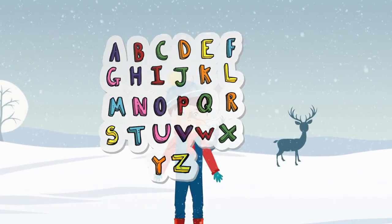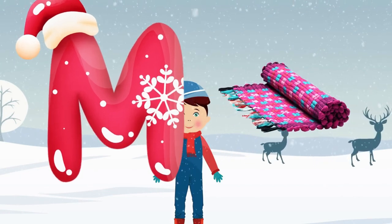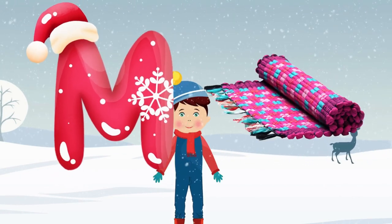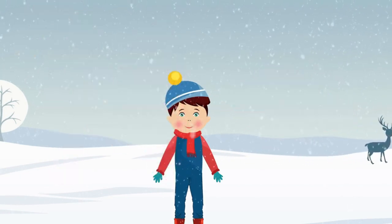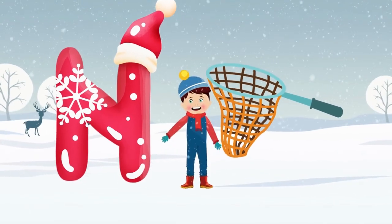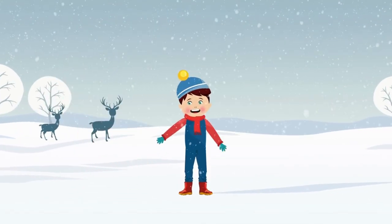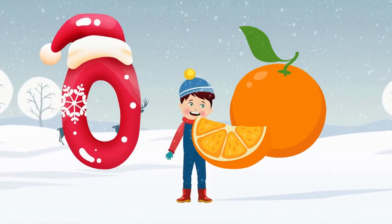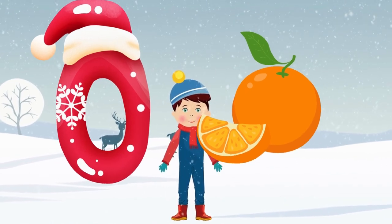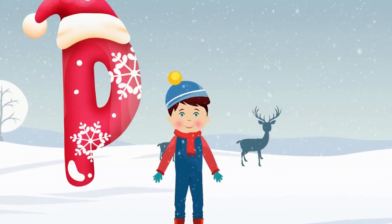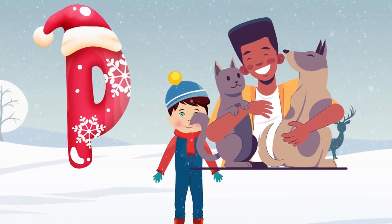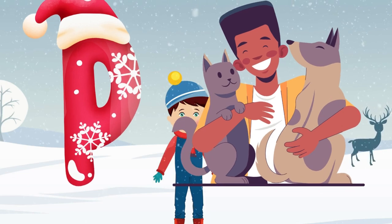M is for mat, m-m-mat. N is for net, n-n-net. O is for orange, o-o-orange. P is for pet, p-p-pet.